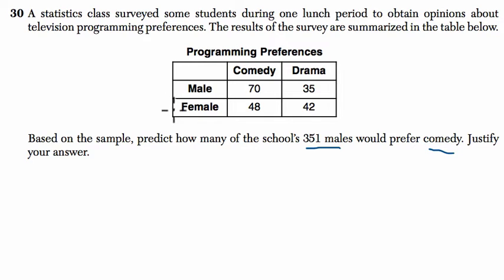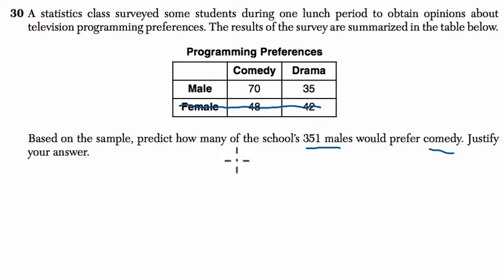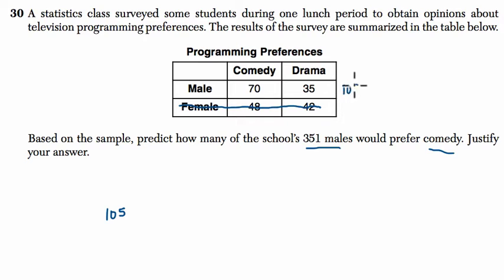So in this table, we really kind of ignore the female students — we're just focusing on males. So how many males are there in total in this survey? There are 105, right? 70 plus 35. So total — there are 90 females total.